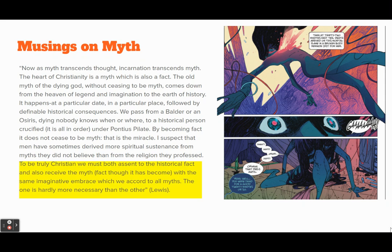There are a few things I want to cover, then I'll go back to playing theologian without a license. Lewis, perhaps the key Christian apologist of the 20th century, says that to be truly Christian we must assent to historical fact and also receive the myth — and the one is hardly more necessary than the other. Believe Christ as fact, and believe the myth of the god who came down, became mortal for the good of all humanity. That's a myth that crosses many cultures — a god who became mortal.